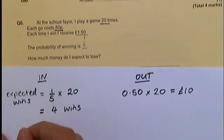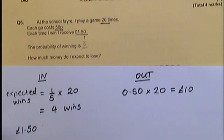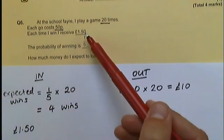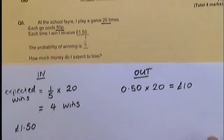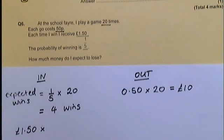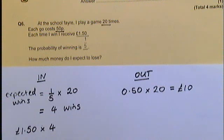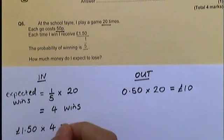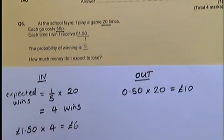Each time I win, I'm going to receive £1.50 — it says so here. So I need to think about how much money I'm going to gain from my wins. I'm winning 4 times, and each of those is £1.50 back in my pocket — £1.50 for each of the four wins. So the sum I'm going to do is £1.50 times 4, which gives me £6.